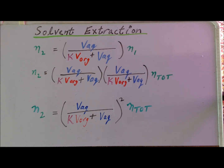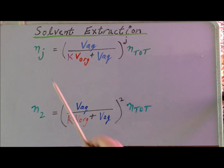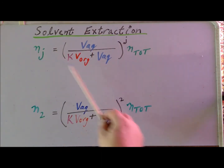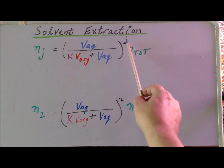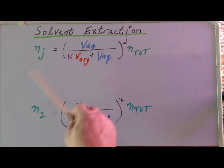We can continue to extract, and so long as we do it with the same volume of the same organic compound, we essentially repeat this step again. So we can write this expression more generally: after the jth extraction, the number of moles of the solute remaining in the aqueous phase is N_j, evaluated by this expression, where j is the number of extractions done identically with the same volume of organic material, giving the identical partition coefficient K.